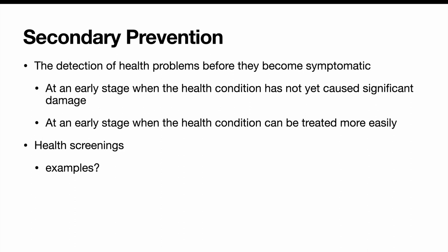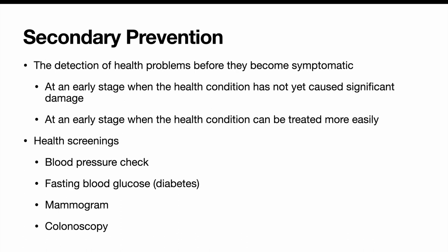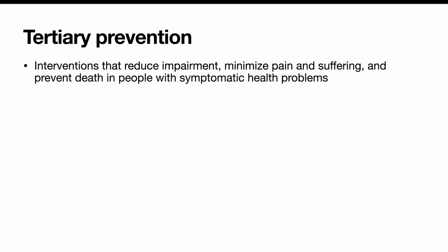Secondary prevention is the detection of health problems before they become symptomatic. At an early stage, you want to detect a health condition before it's caused significant damage, when it can still be treated more easily. Examples include health screenings, mammography, blood pressure screenings, fasting blood glucose, and colonoscopy — you want to catch these diseases early while they can still be treated effectively.